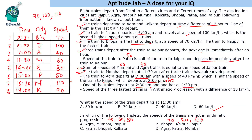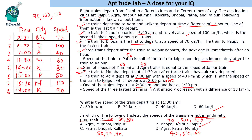Bhopal-Raipur-Jaipur at 70, 80, 100 is not in arithmetic progression, so that is the answer. Patna-Bhopal-Kolkata is 50, 70, 90 — in AP. Agra-Patna-Mumbai is 40, 50, 60 — also in AP. So Bhopal-Raipur-Jaipur is the triplet not in arithmetic progression.